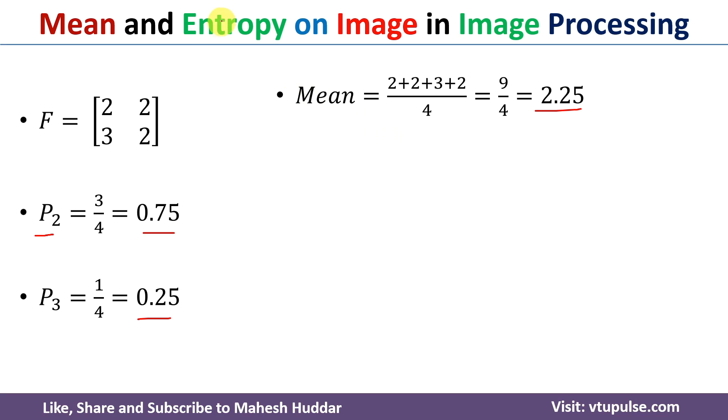Now, once you calculate the mean, the next step is to calculate the entropy. The entropy H is always equivalent to minus summation of pk log pk to the base 2 over all possible pixel values.